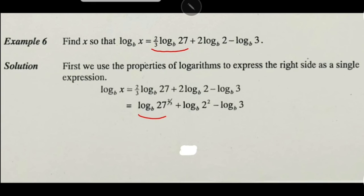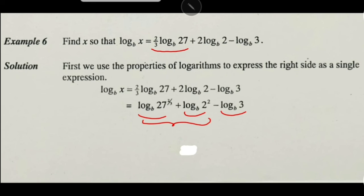2·log_b(2) becomes log_b(2²) by property 7, and log_b(3) stays as log_b(3). Then we combine logs using property 5 for the sum steps, and finally property 6 for the difference of two logs, reducing everything to one single log.